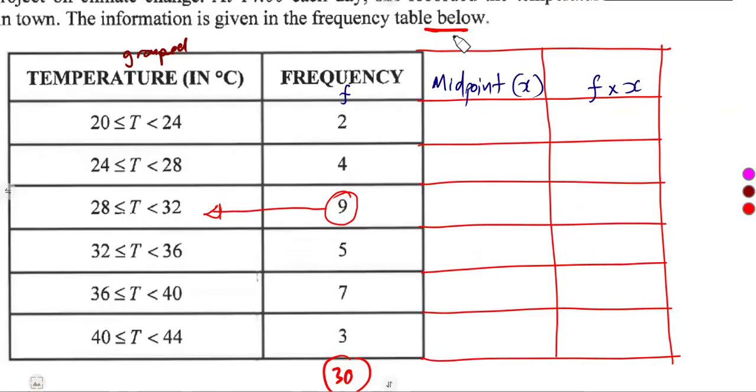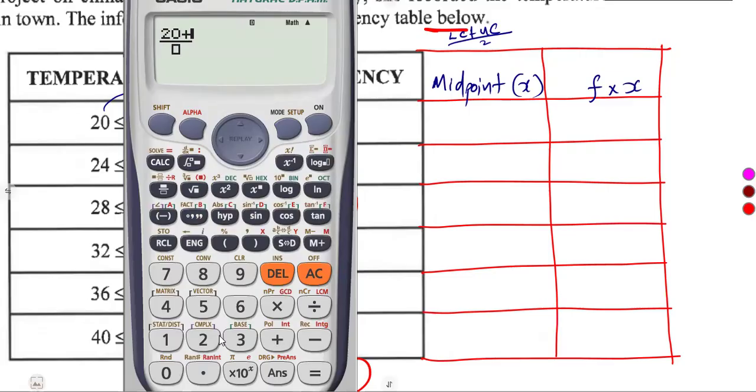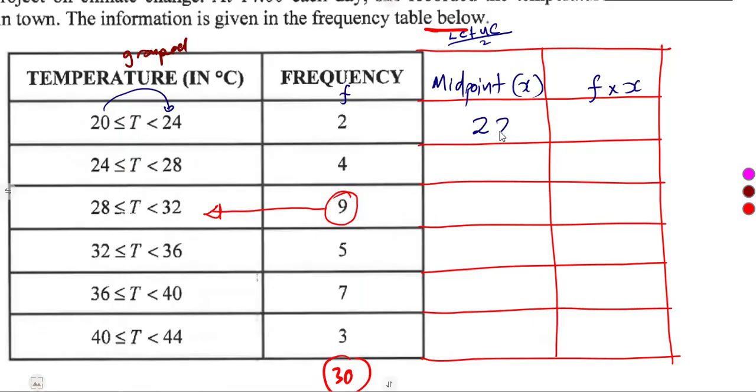Remember how to determine the midpoint: lower class added to the upper class boundary, divided by 2. The first class from 20 to 24, you add 20 and 24, then divide by 2. That's going to give us 22 in between. You do the same thing between 24 and 28, that's 26. 28 and 32, which is 30. 32 and 36, which is 34. 36 and 40, which is 38. 40 and 44, the midpoint is going to be 42.